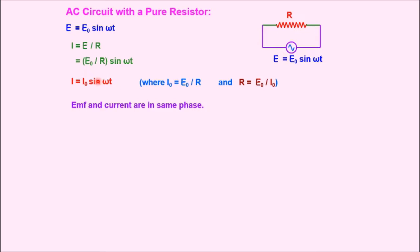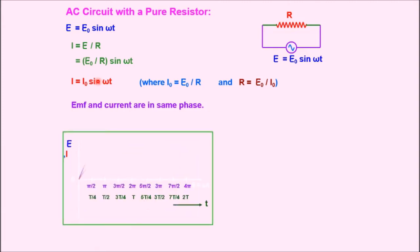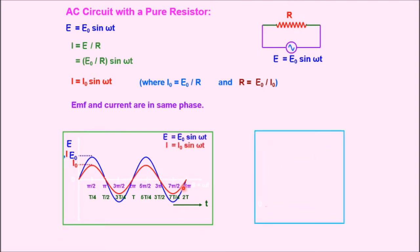In a pure resistance circuit there is no phase difference between current and EMF — EMF and current are in the same phase. The physical significance is that there is no lag, no hysteresis, and no delay of phase when a pure resistance circuit is connected with an alternating current source. The graph shows the same pattern for both EMF and current. The blue line represents EMF and the red curve represents current. In the phasor diagram, E naught and I naught both have the same phase, omega t.